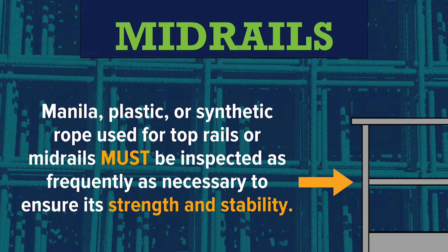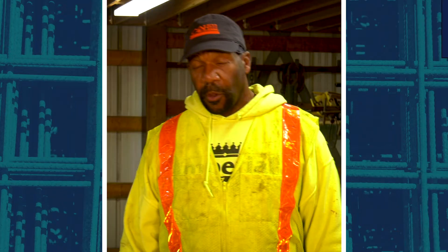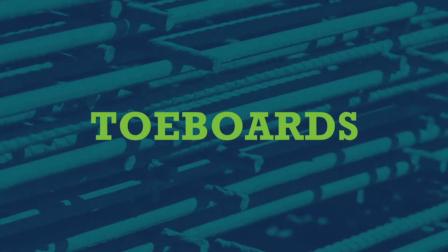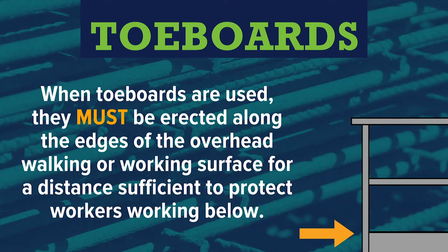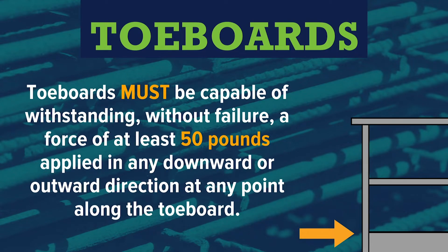Manila, plastic, or synthetic rope used for top rails or mid-rails must be inspected as frequently as necessary to ensure its strength and stability. A toe board is the bottom board used to prevent tools or any loose material from falling off and injuring a worker below. There must be no more than a quarter-inch clearance in a toe board. Toe boards must be erected along the edges of the overhead walking or working surface for a distance sufficient to protect workers below, and must withstand without failure a force of at least 50 pounds applied in any downward or outward direction.